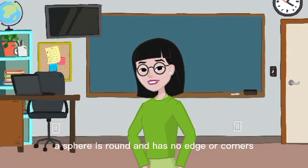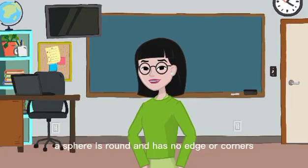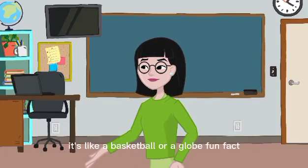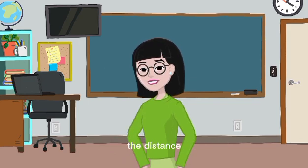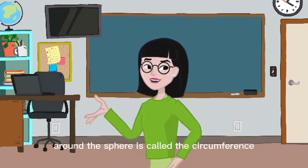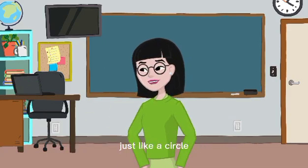A sphere is round and has no edges or corners. It's like a basketball or a globe. Fun fact! The distance around a sphere is called the circumference, just like a circle.